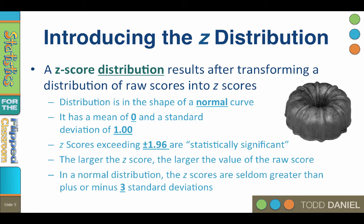Finally, in a normal distribution, z-scores are seldom greater than plus or minus three standard deviations. Roughly speaking, approximately two-thirds of scores fall between one standard deviation above and one standard deviation below the mean. About 95% of scores are between two standard deviations above and below the mean, and approximately 99% are between three standard deviations above and below. Because 99% of scores are less than positive or negative 3, it is highly unlikely to find scores beyond that z value.